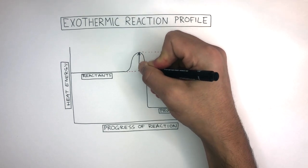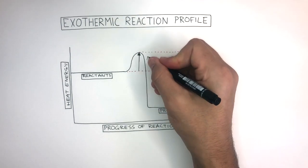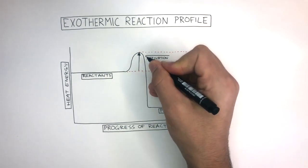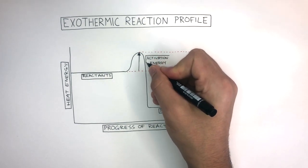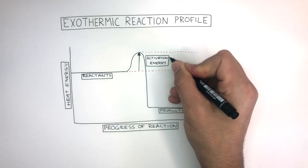From this red line to this red line shows how much energy was absorbed from the surroundings. We can represent this using an arrow — this is the activation energy, which is the minimum amount of energy required to start a reaction.